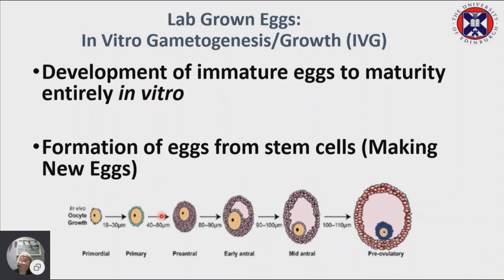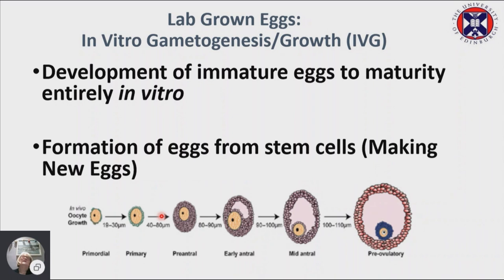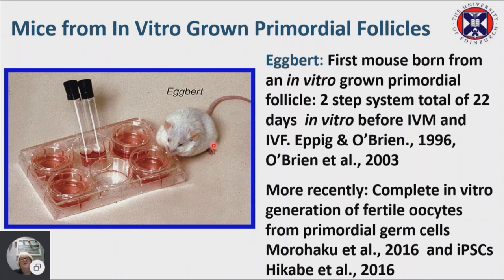What's given us hope to pursue this in other species is that immature oocytes from primordial follicles have been grown entirely in vitro in a mouse model. This was first done in 1996 at the Jackson Lab, in John Eppig's lab. At that time, only one mouse was born after in vitro growth of primordial follicles, in vitro maturation, and subsequent fertilization — and this was Egbert. Egbert was not a healthy mouse, so people assumed it was because he was derived from an in vitro grown oocyte, but there was really no evidence to support that.